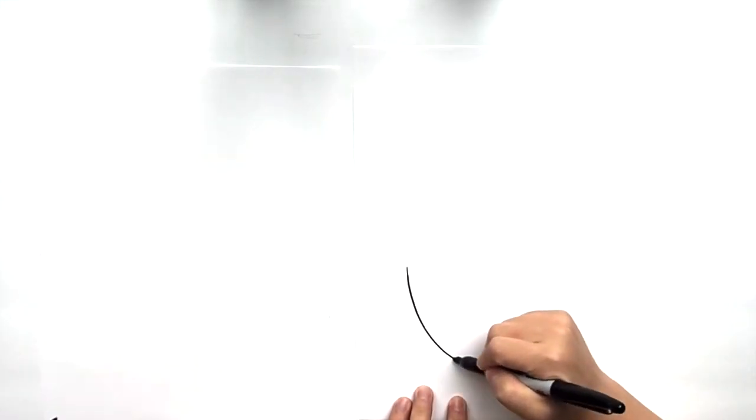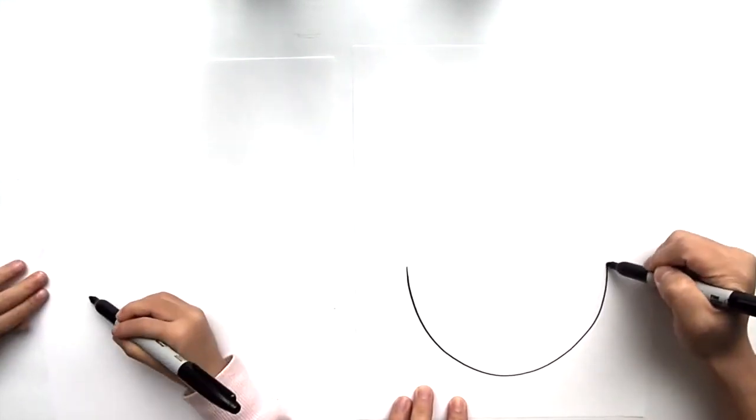All right, welcome friends to another video where we're going to draw a hatching dinosaur egg today. So to begin, we're going to draw the eggshell. To do that, we're going to draw a half circle.